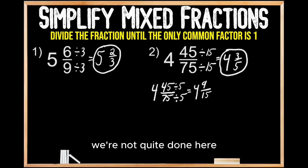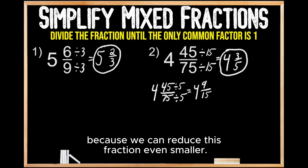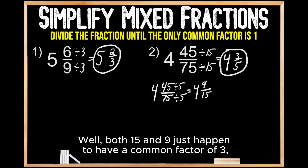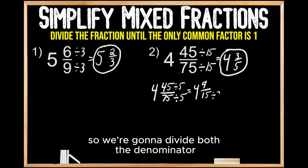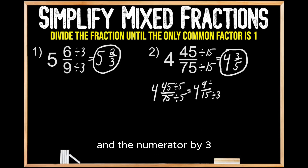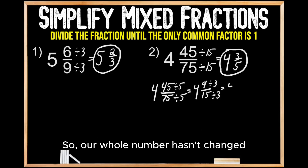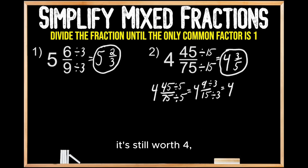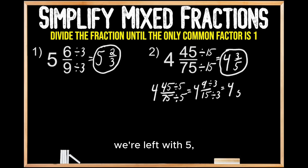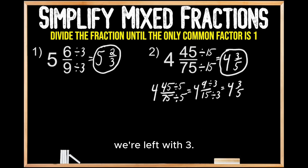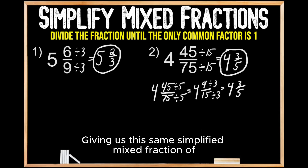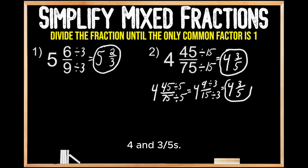As you've noticed, we're not quite done here because we can reduce this fraction even smaller. Both fifteen and nine have a common factor of three, so we're going to divide both the denominator and the numerator by three to simplify this fraction even further. Our whole number hasn't changed — it's still worth four. When we divide fifteen by three, we're left with five, and when we divide nine by three, we're left with three, giving us this same simplified mixed fraction of four and three-fifths.